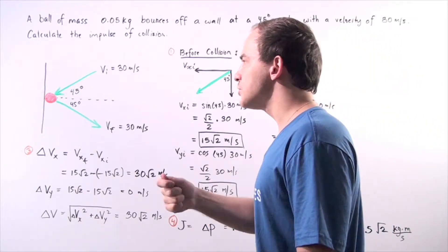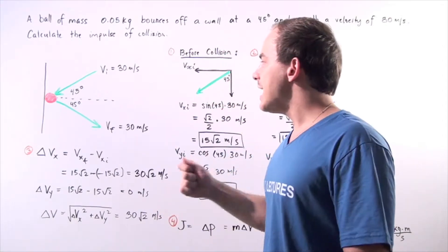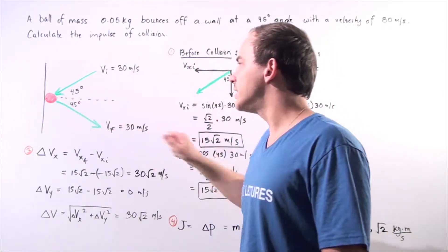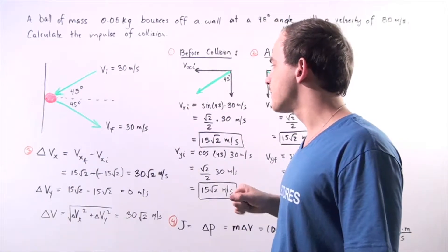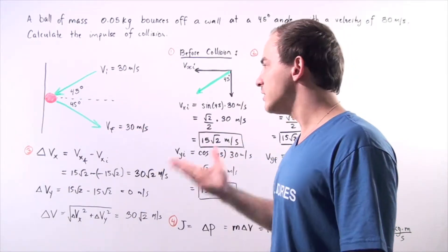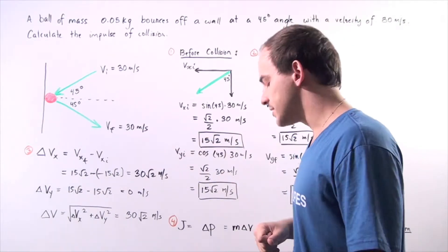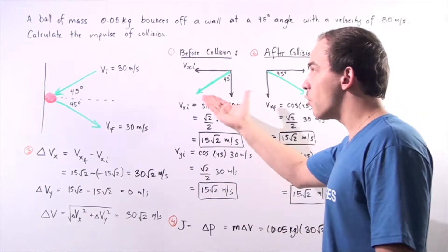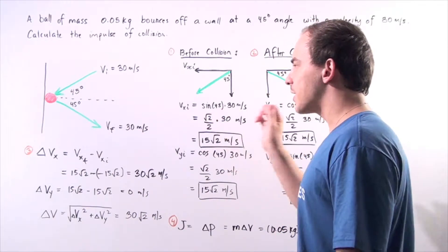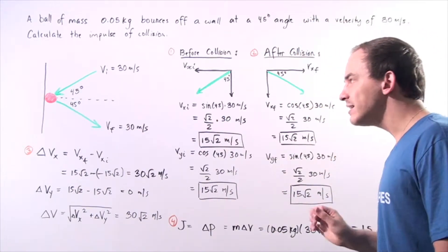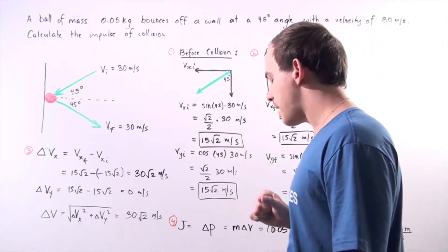Now after our collision takes place, after the object experiences the impulse, it travels in the following direction at an angle of 45 degrees below the x-axis and has a magnitude of 30 meters per second. So our velocity before and after collision has the same magnitude but differs in direction. We want to calculate the impulse of the collision using this information.